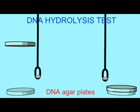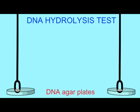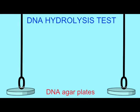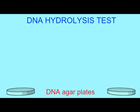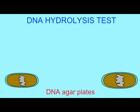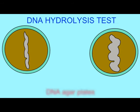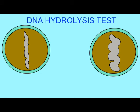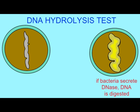Some bacteria secrete DNases, enzymes which digest DNA polymers. If DNA is incorporated into the agar, a clear zone around bacterial growth indicates the secretion of DNase enzymes.